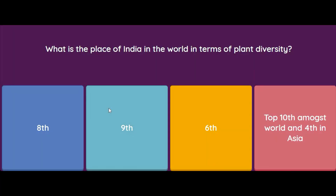This brings us to the last MCQ question of Part 1. If you have liked the way these MCQs have been prepared, please comment and suggest improvements for the next video. The last question: what is India's place in the world in terms of plant diversity — 8th, 9th, 6th, or top 10th in the world and 4th in Asia? As per the latest information, the answer is top 10th in the world and 4th in Asia. Thank you for watching — I hope you liked it. I wish you all the success and good luck. Keep watching and keep sharing.